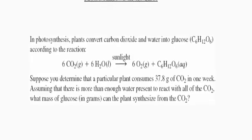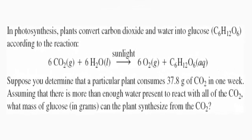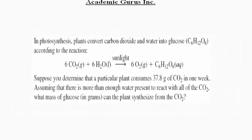Today, I'll be solving a stoichiometry question that was sent in by Vinny. The question reads: In photosynthesis, plants convert carbon dioxide and water into glucose according to the reaction. We're given a reaction here where we have 6 moles of carbon dioxide added to 6 moles of water, and that yields 6 moles of oxygen and 1 mole of glucose. The question continues: Suppose you determine that a particular plant consumes 37.8 grams of carbon dioxide in one week. Assuming that there is more than enough water present to react with all of the carbon dioxide, what mass of glucose in grams can the plant synthesize from the carbon dioxide?